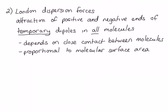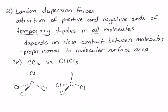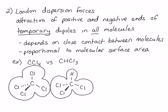Let's compare carbon tetrachloride (CCl4) with chloroform (CHCl3). Both carbons are sp3 hybridized, meaning they're tetrahedral, but carbon tetrachloride has a larger surface area because having four chlorines — which are larger than hydrogen — takes up more space than having three chlorines and a hydrogen. Since chloroform has a smaller surface area than carbon tetrachloride, CCl4 will have stronger London dispersion forces, and we would expect a higher boiling point for CCl4. This is in fact the case: the boiling point of carbon tetrachloride is 77°C, while the boiling point of chloroform is 62°C.